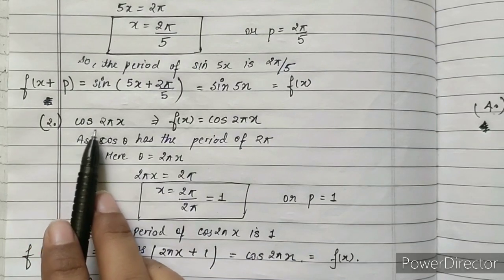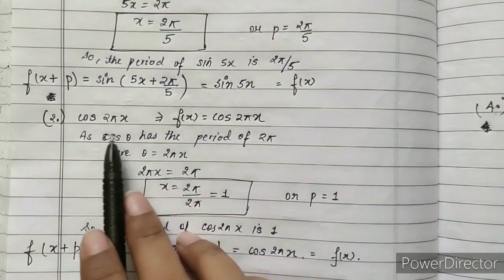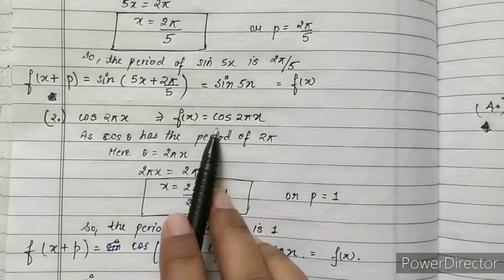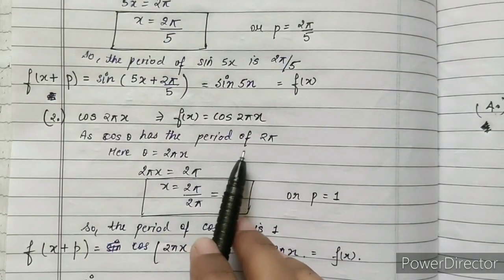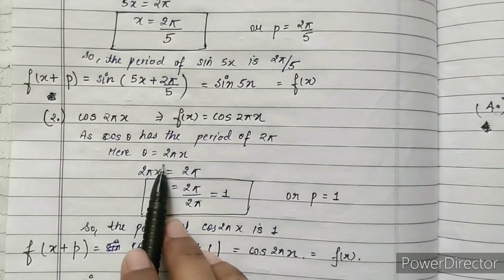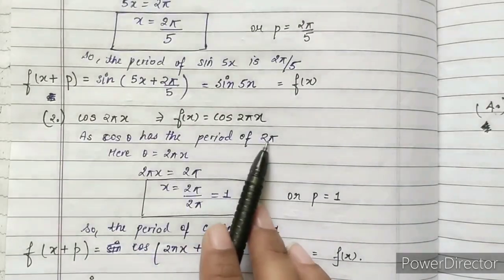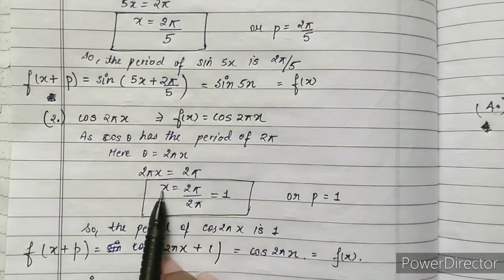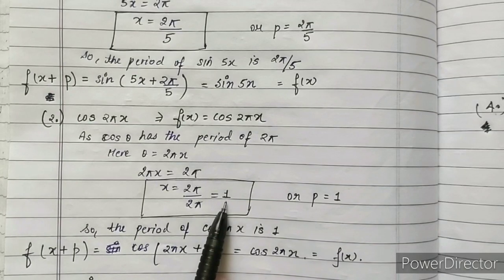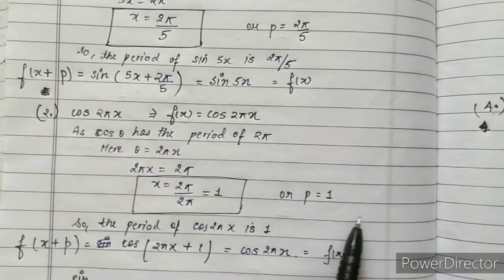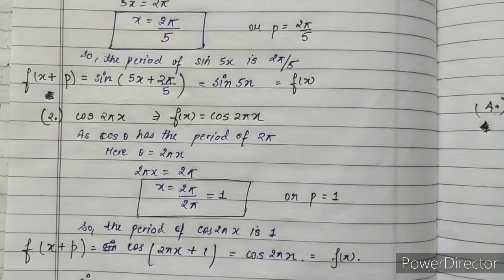Similarly, the next example is cos(2πx). Here f(x) = cos(2πx). Since cos(θ) has a period of 2π, theta equals 2πx. We equate 2πx = 2π, and x equals 2π divided by 2π, which equals 1. So the period is 1.